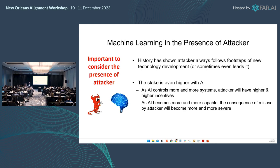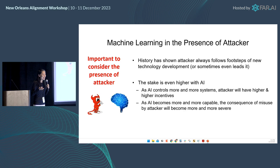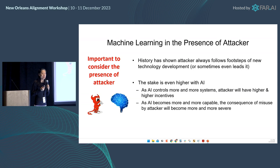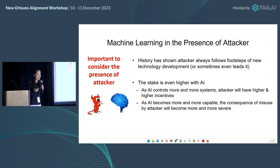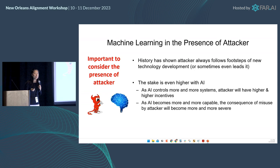It's really exciting to talk about machine learning and all the great advancements. But coming from a security background, one message I really want to get across is that as we talk about all the great things machine learning can do, it's really important to consider the development and deployment of machine learning in the presence of attackers. History, especially in cybersecurity, has shown that attackers always follow the footsteps of new technology development, or sometimes even lead it. And the stakes with AI are even higher — as AI controls more and more systems, attackers will have higher incentives to attack, and as AI becomes more capable, the consequences of misuse will also become more severe.